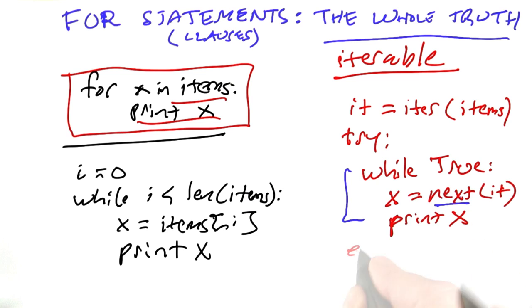But when next stops, then we'll have an exception, which is a stop iteration exception, and we don't need to do anything more. We're done. And so that's what a for loop really means in Python.